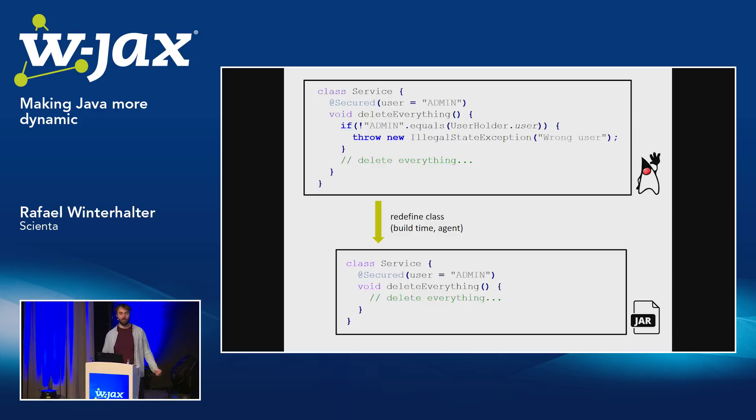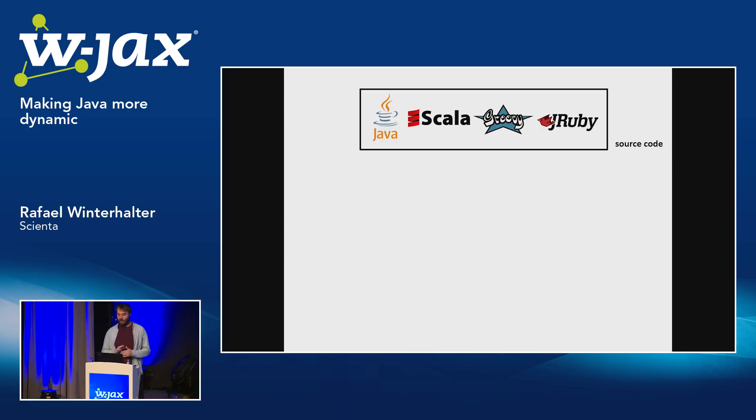We'll talk about both. With my library, you can write code that does both types of instrumentations — you basically just configure what you want to do or how you want to apply it. However, just before we get into the details of bytecode and code manipulation, I want to explain why the Java Virtual Machine is so special in this regard. Many languages do not have runtime code generation, either because they don't have a need for it or because they don't have support for it.